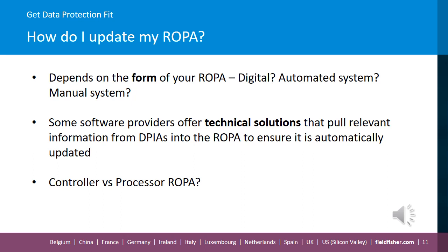If you already have your own ROPA formats in place, it may be useful to check the format of your ROPAs against these templates to ensure that there are no gaps and you've captured the required fields, which Casey-Ann mentioned earlier in this session. Both the ICO and CNIL websites have templates for controller and processor ROPAs. Just to note that our guidance in this video applies to whether you're updating your ROPAs in your capacity as a controller or as a processor.